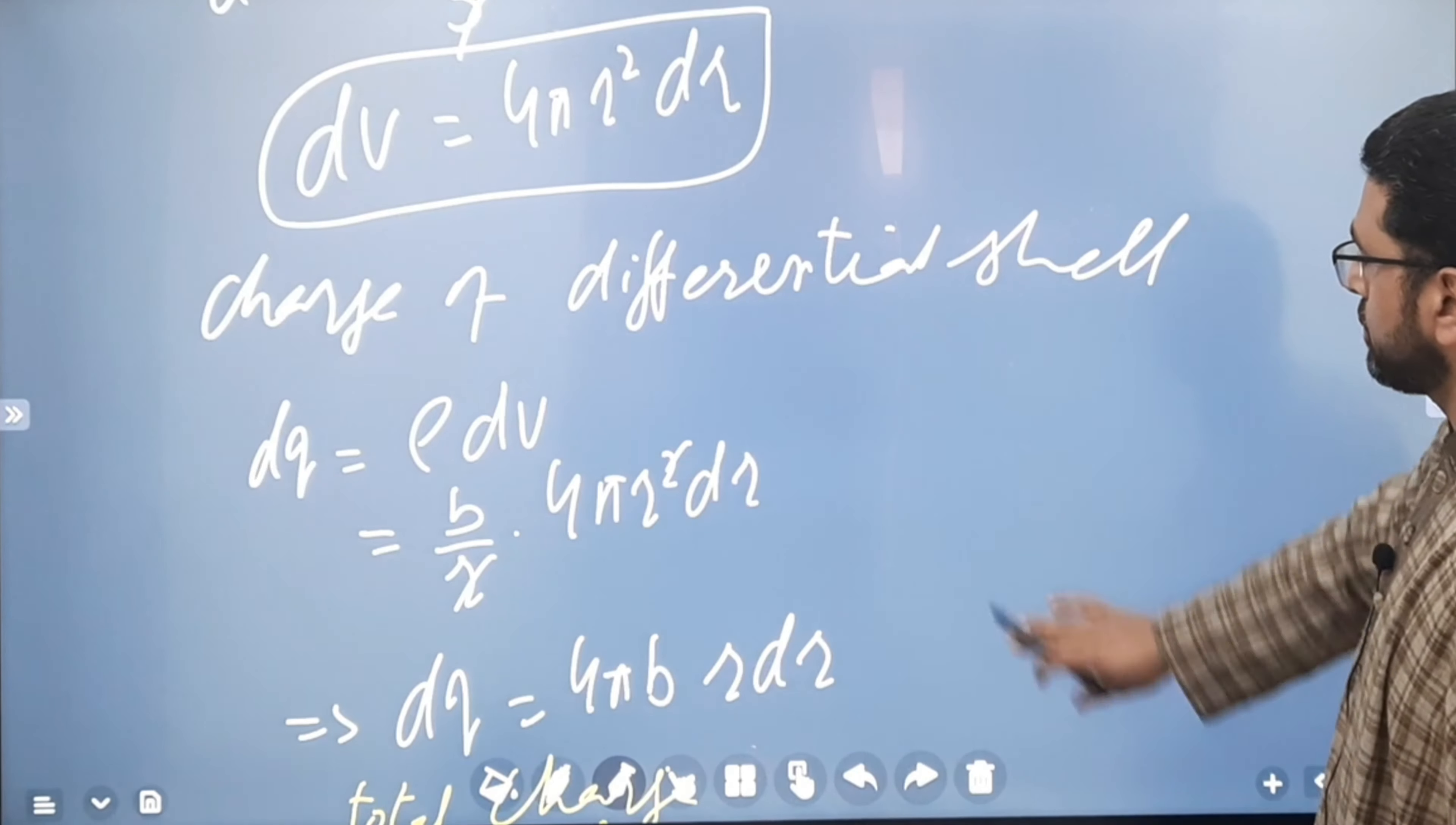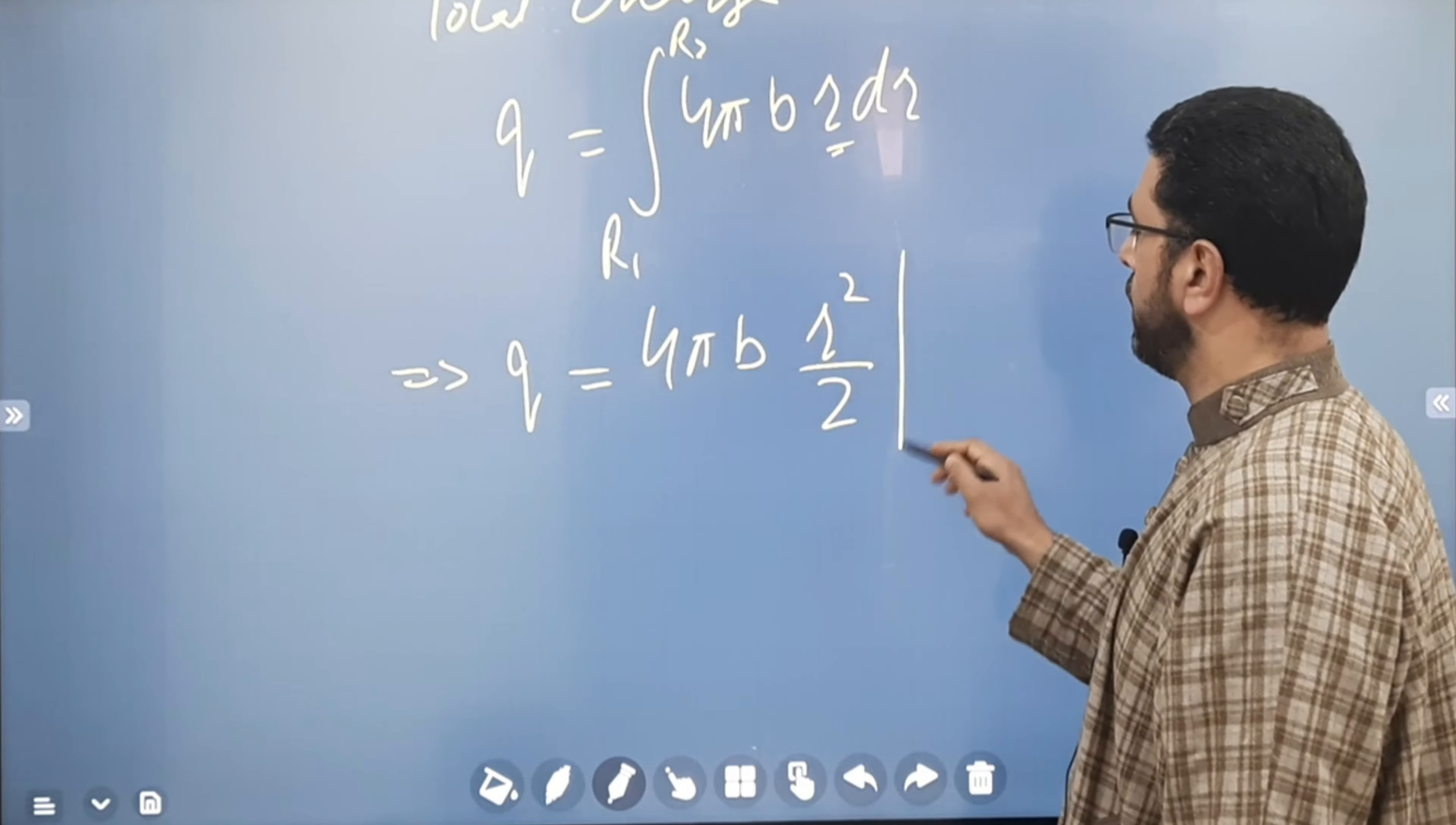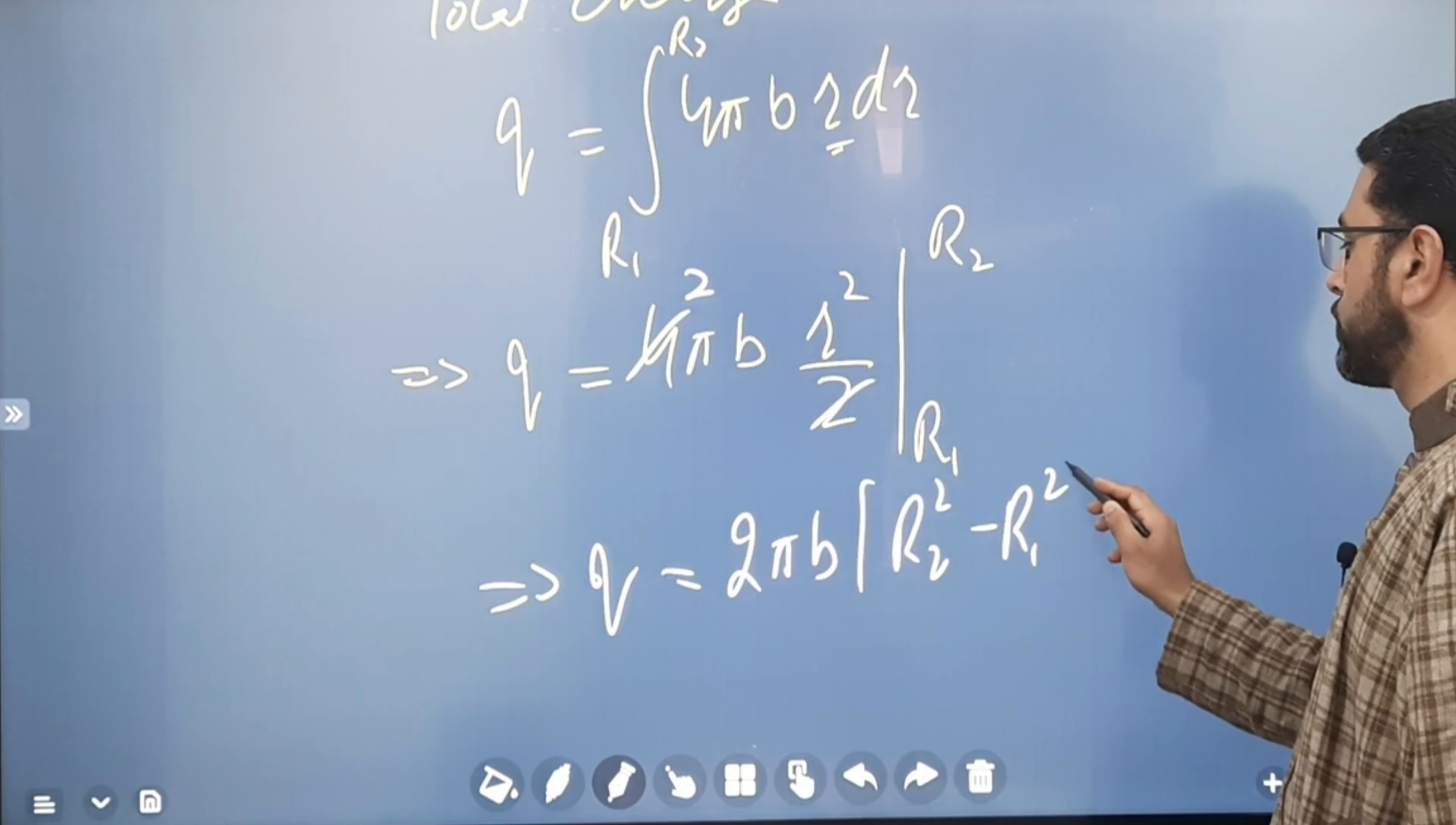This implies Q is equal to 4 pi B common. It is a constant. Integration of R is R square by 2 with limits R1 to R2. 2 and 2 cancel out. So, this implies Q is equal to 2 pi B. Let's substitute the limits. R2 squared minus R1 squared.